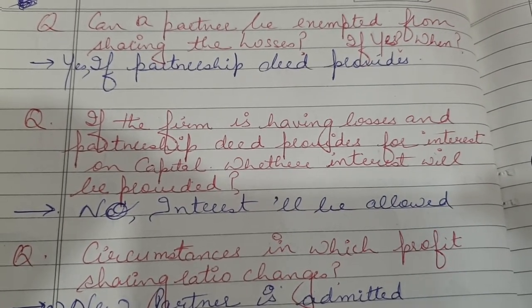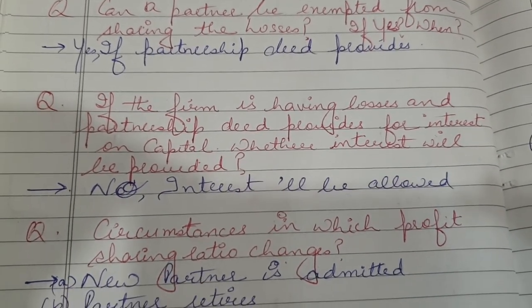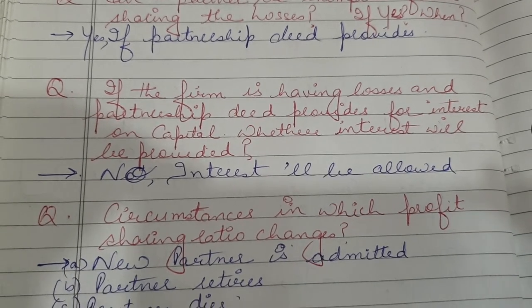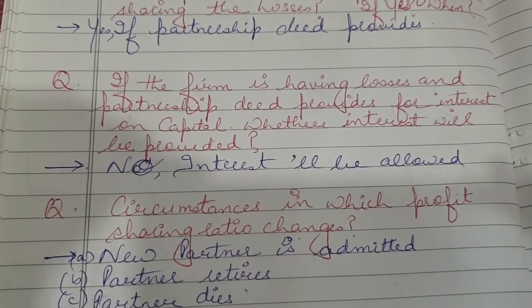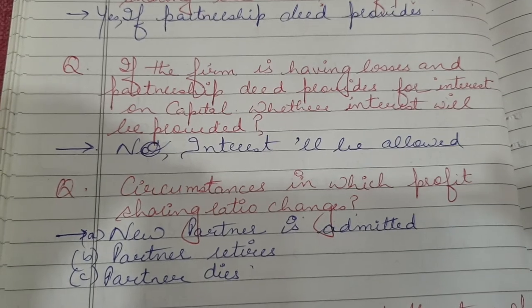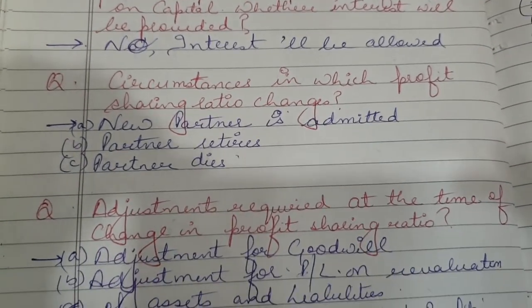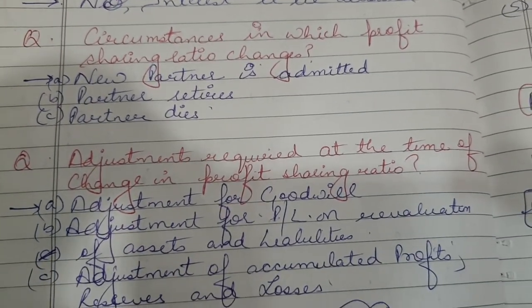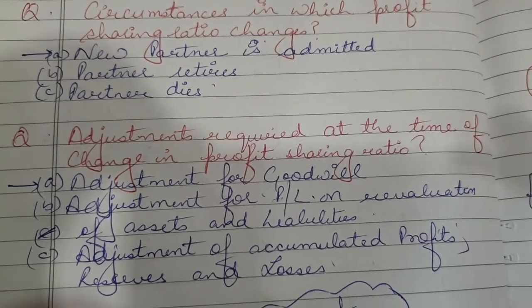Very important question: what are the circumstances in which the profit sharing ratio changes? It changes when a new partner is admitted, when a partner retires, and when a partner dies. The next question is: what are the adjustments required at the time of change in profit sharing ratio?